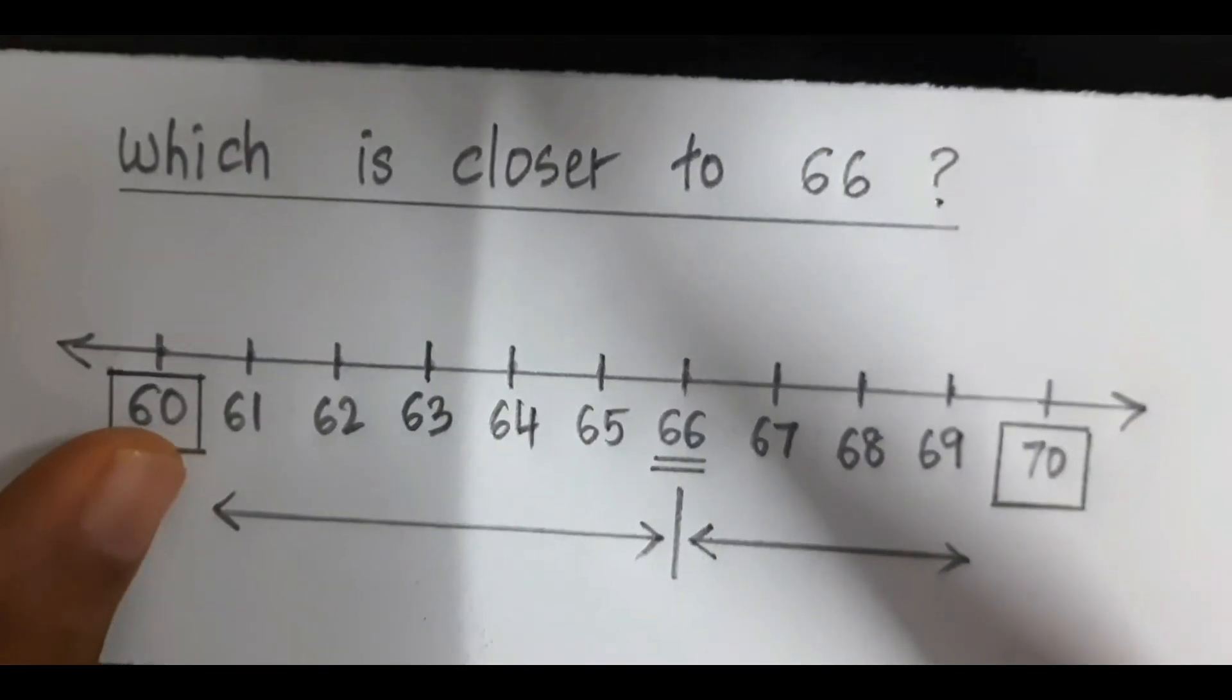Let's take the number 66. Ask the child to mark the numbers from 60 to 70 on a number line, this way.